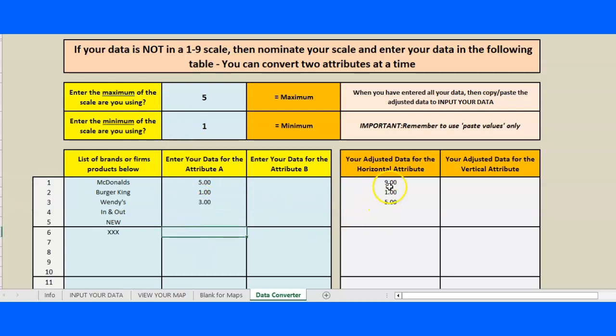If this is a one to seven scale, it would actually repopulate for me. So again, seven becomes nine, five is about six and a bit, and then I can just copy that into my data and it's done.